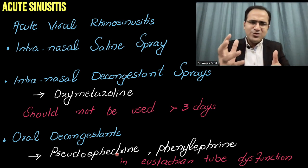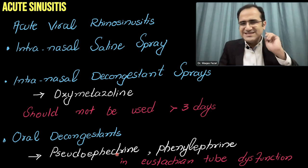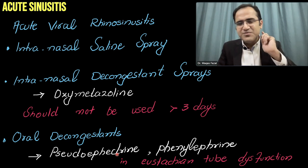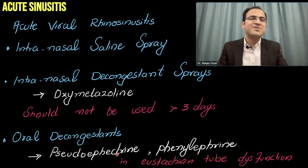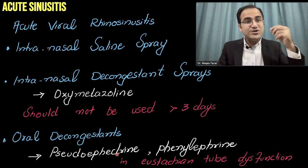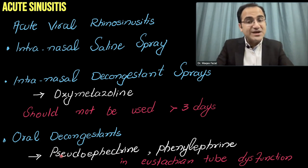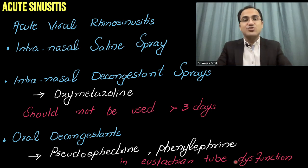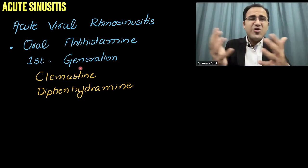Oral decongestants are only used when Eustachian tube involvement is suspected — for example, a patient with flu who now reports severe ear pain or heaviness and hearing difficulty, indicating Eustachian tube blockage. Oral decongestants relieve that congestion and work well for Eustachian tube dysfunction.